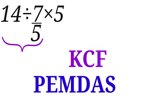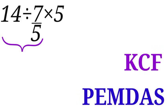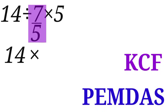We will apply KCF to solve that. K is for keep, C is for change, and F is for flip. For keep, we are going to keep 14. For C, which is change, we are going to change division sign to multiplication sign. And for flip, we are going to flip 7 over 5. We take 5 to the numerator and bring 7 to the denominator.